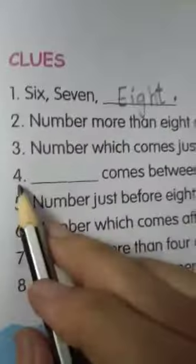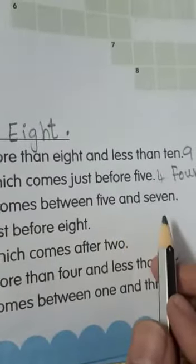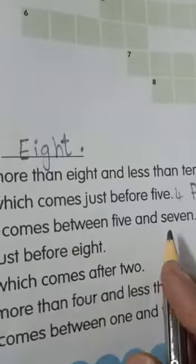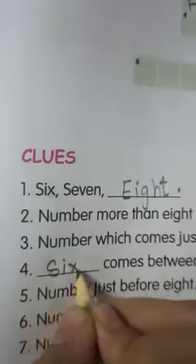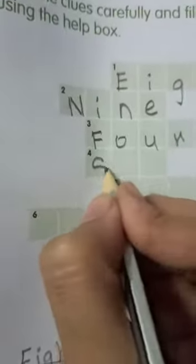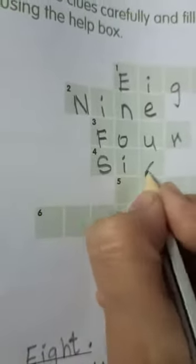The fourth is, what comes between 5 and 7? 6. S, I, X, 6. In the fourth box, we have to write S, I, X, 6.